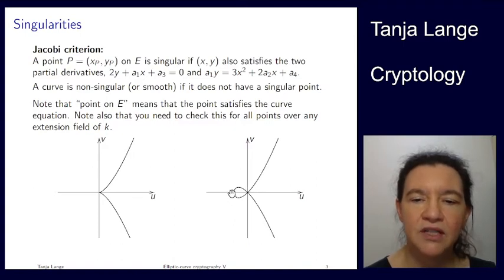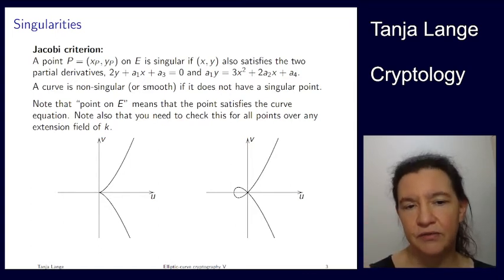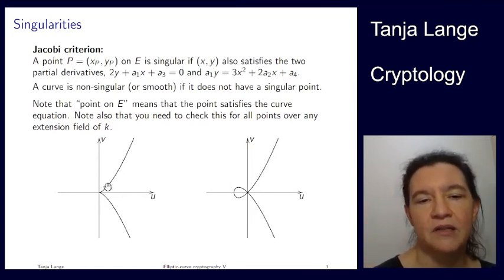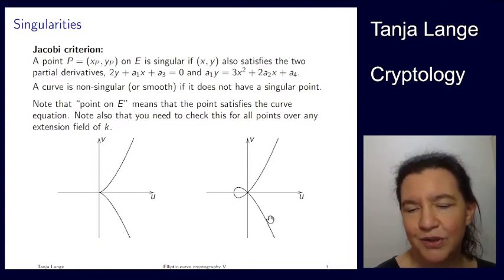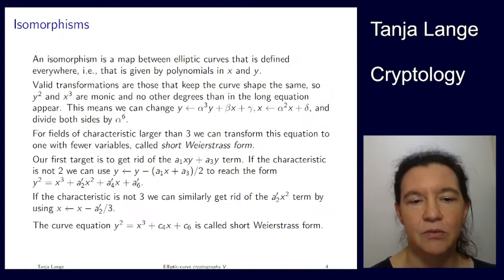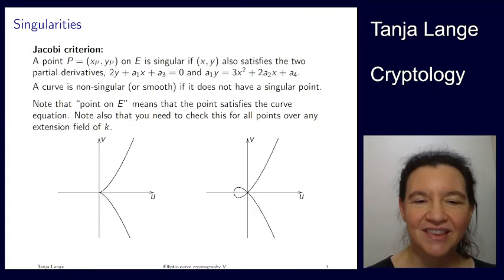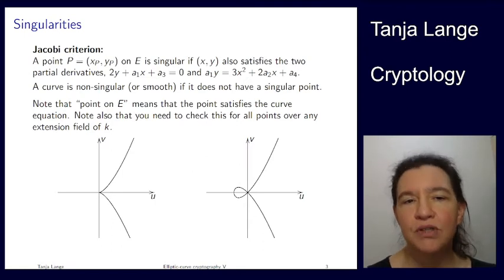Now what is a singularity? A singularity is something that's easiest explained with pictures. It means that if you draw the curve over the reals, you would have either a pointy thing here, it's called cusp, or you would have such a thing which we call a node.